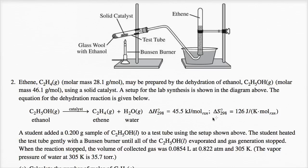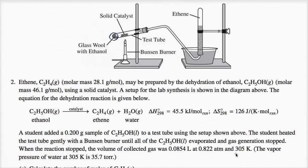A student added a 0.200 gram sample of ethanol, C2H5OH, to a test tube using the setup shown above — the glass wool with ethanol, and a solid catalyst. The student heated the test tube gently with a Bunsen burner until all of the ethanol evaporated and gas generation stopped. When the reaction stopped, the volume of gas collected was 0.0854 liters at 0.822 atmospheres and 305 Kelvin.